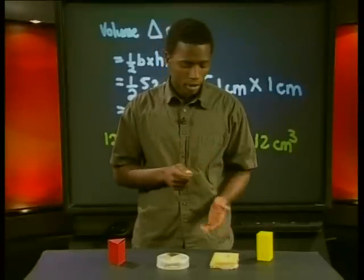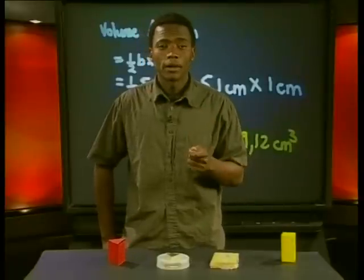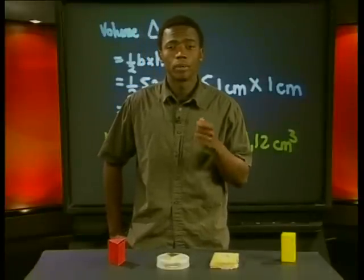Take for example, this block of hard cheese. It's in the shape of a right rectangular prism. By applying the formula for the volume of a right rectangular prism, I have worked out that this piece of hard cheese has a volume of...